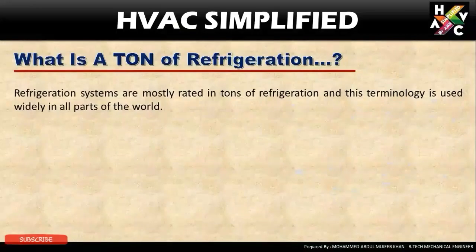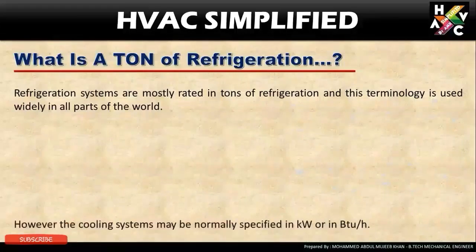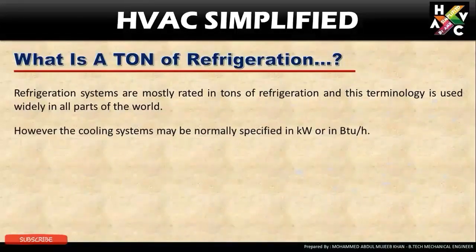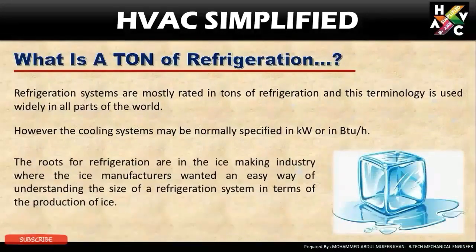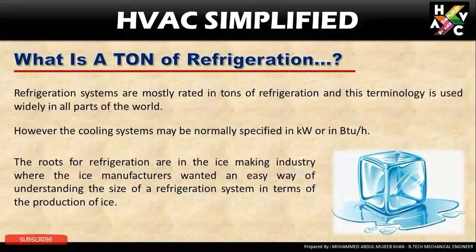Refrigeration systems are mostly rated in ton of refrigerant and this terminology is used widely in all parts of the world. However, the cooling system may normally be specified in kilowatts or in BTU per hour. The roots of refrigeration are in the ice making industries where the ice manufacturers wanted an easy way of understanding the size of a refrigerant system in terms of a production of ice.